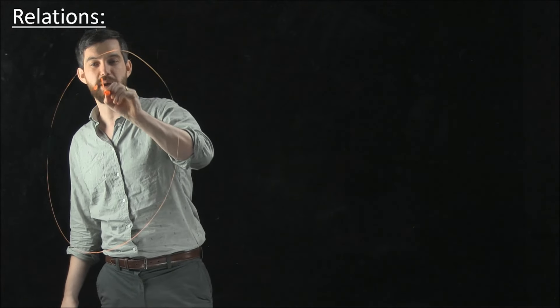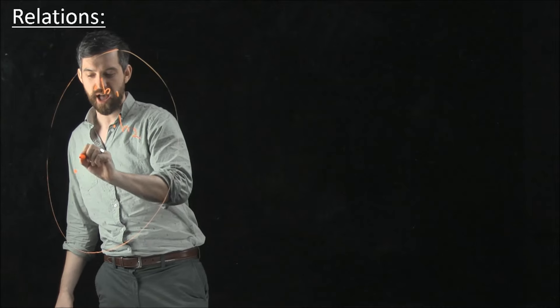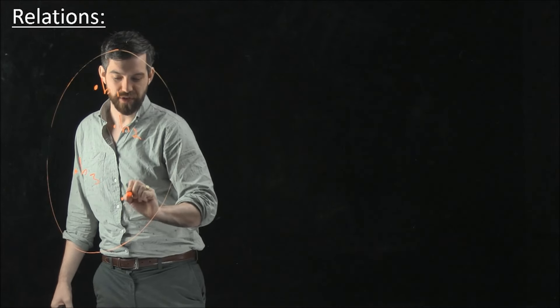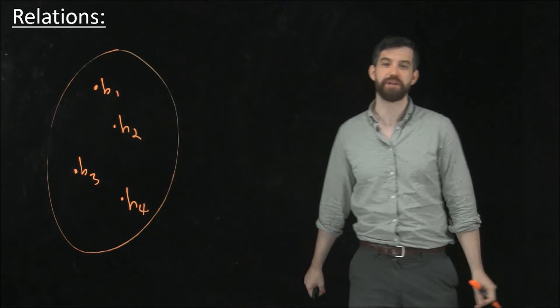So I'm going to put a point here, maybe I'll call it, I've got a human one, I've got a human two, I've got a human three, I've got a human four, something like that. So this is the set that contains a bunch of different humans.